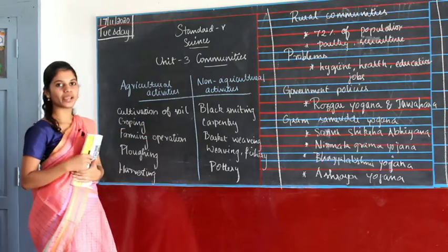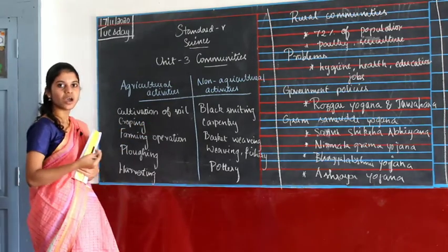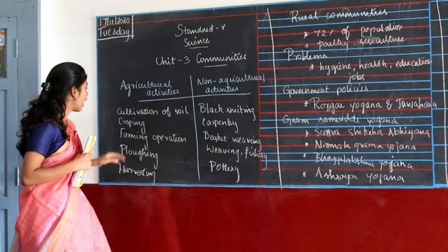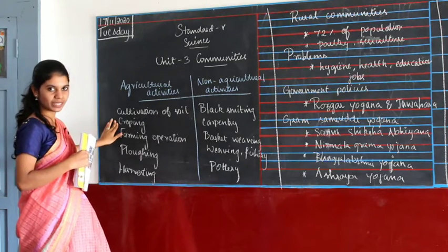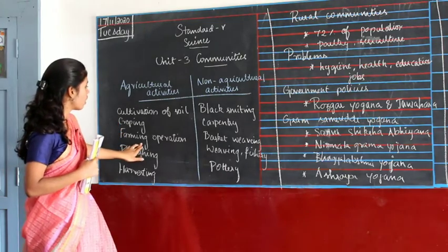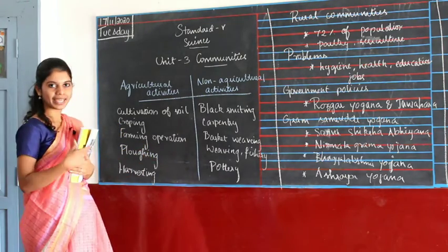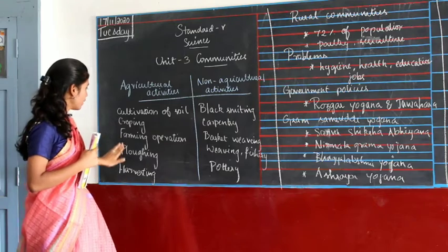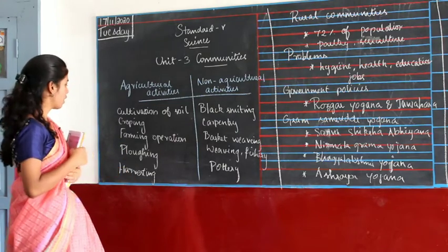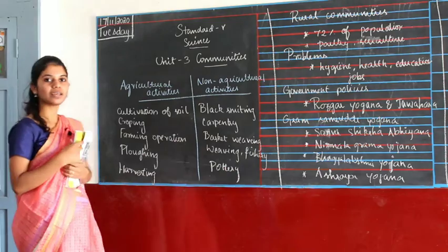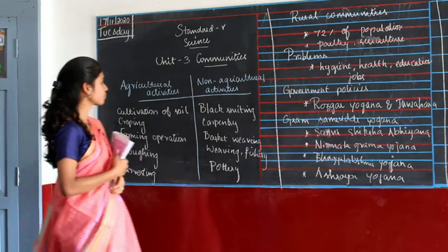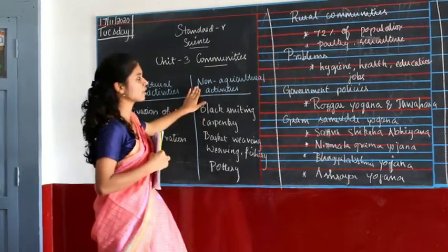Cultivation of soil — we make the soil more soft so that the crops can grow faster. Then cropping is sowing the seeds to grow. And harvesting is the cutting of the crops after they have grown well.